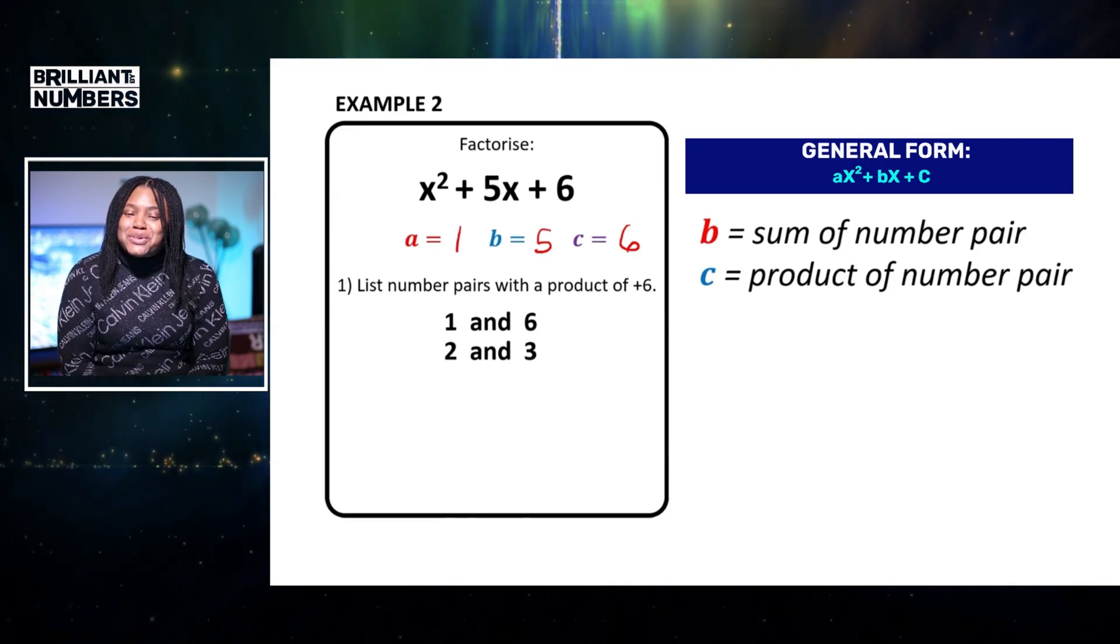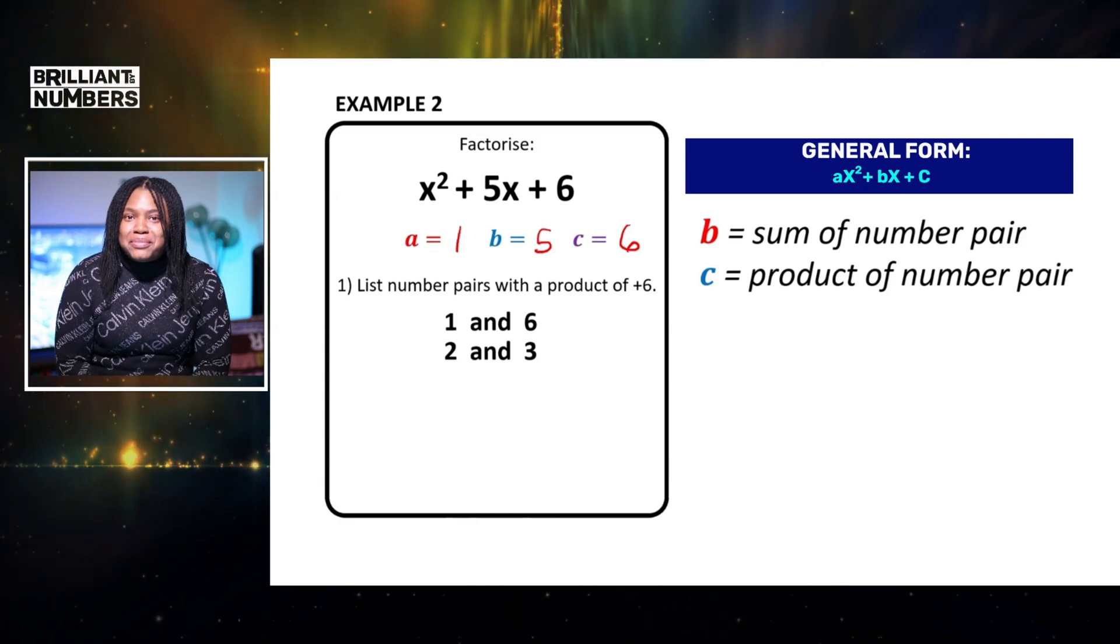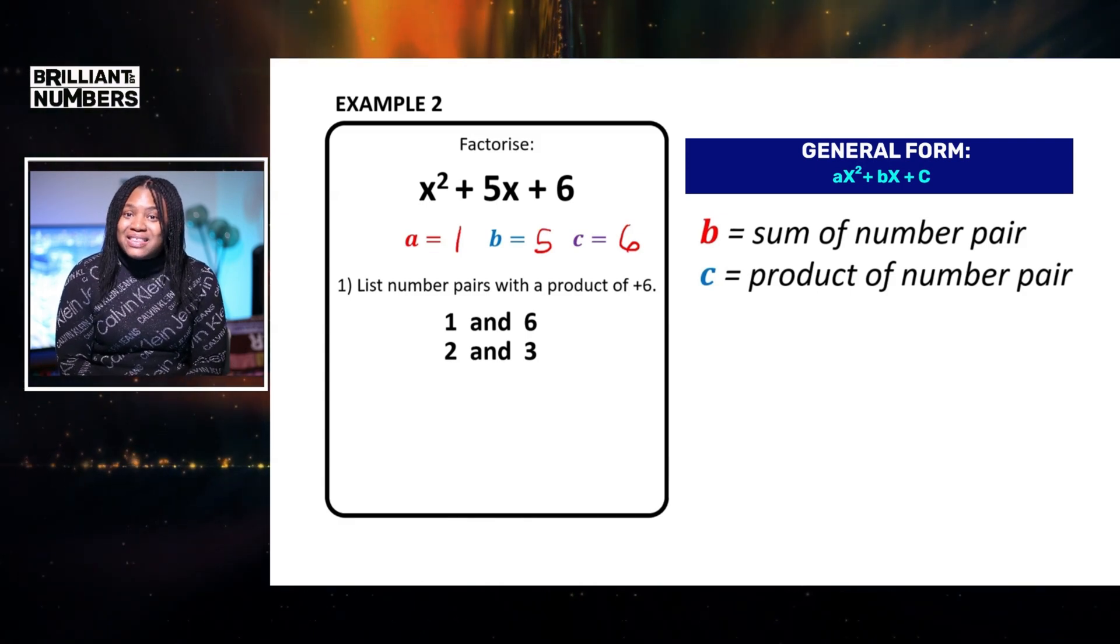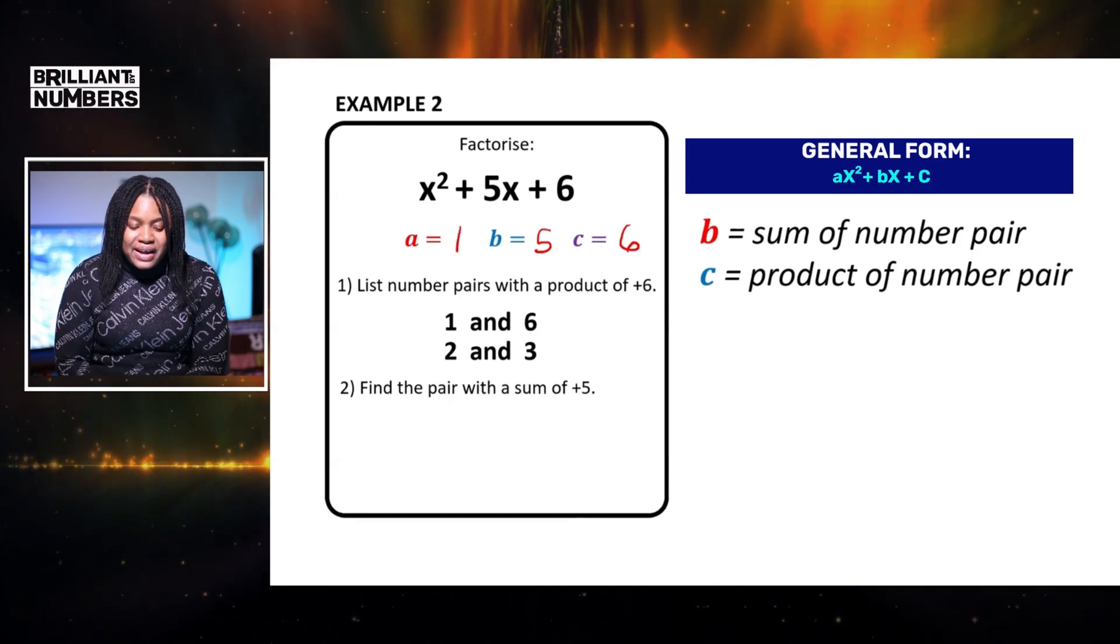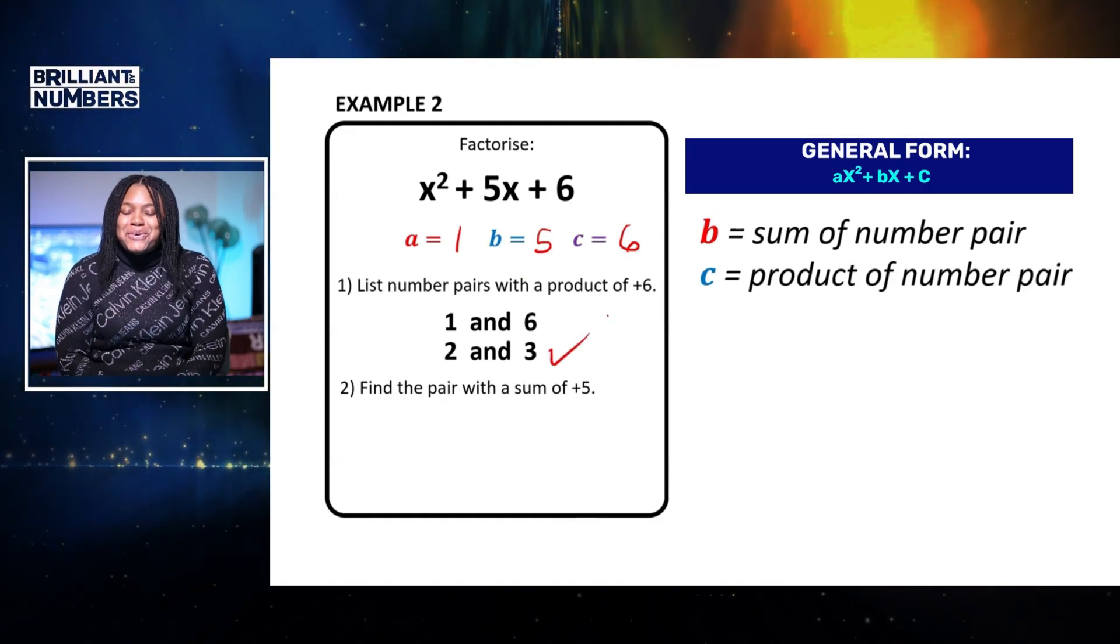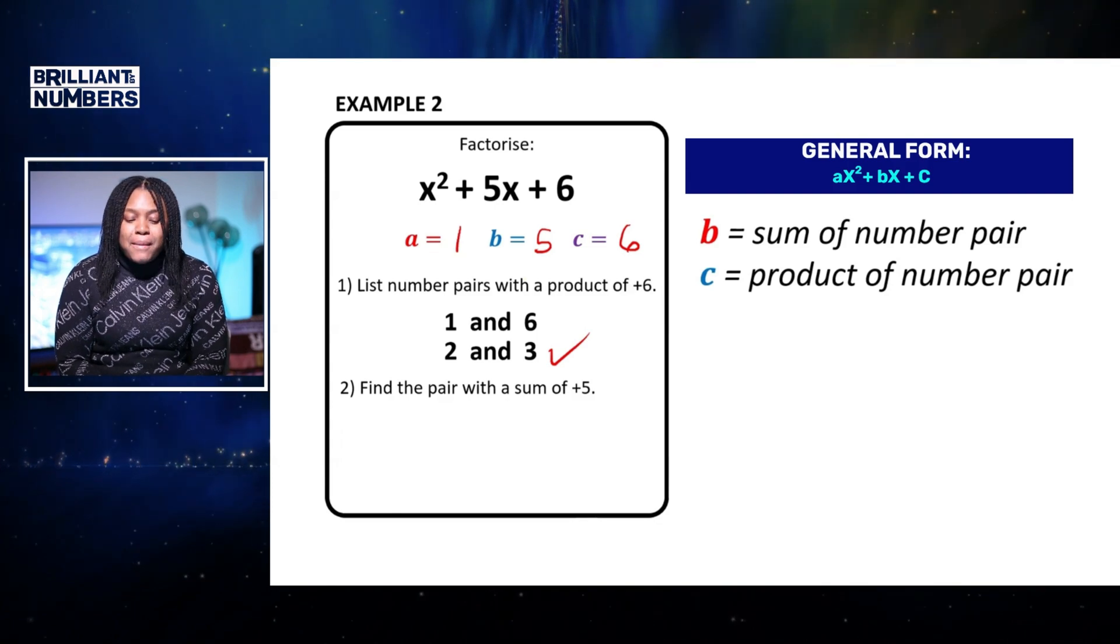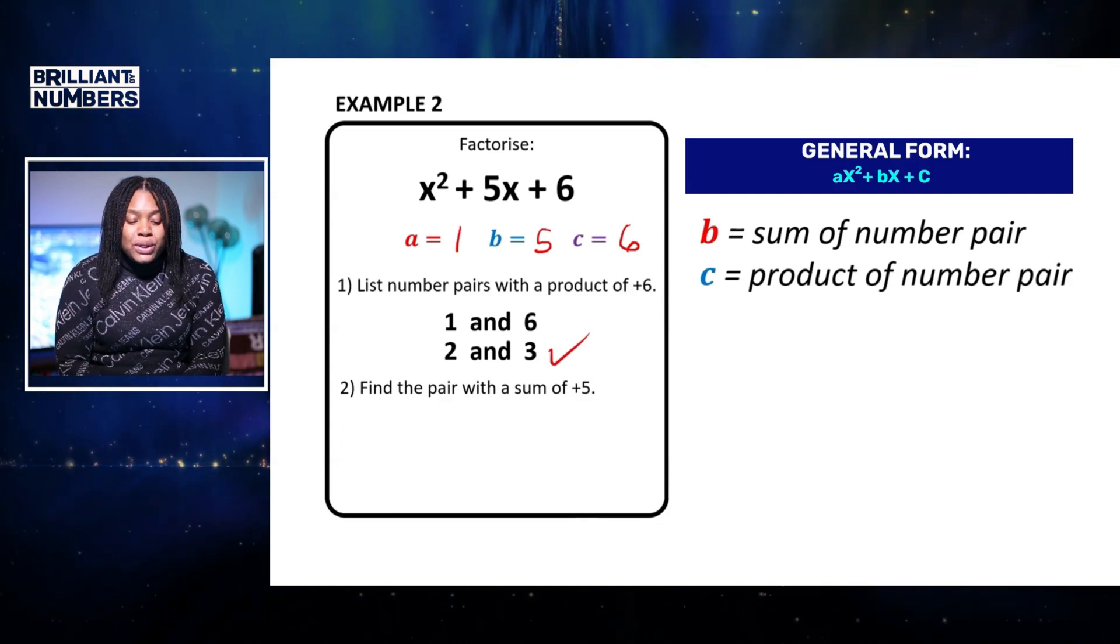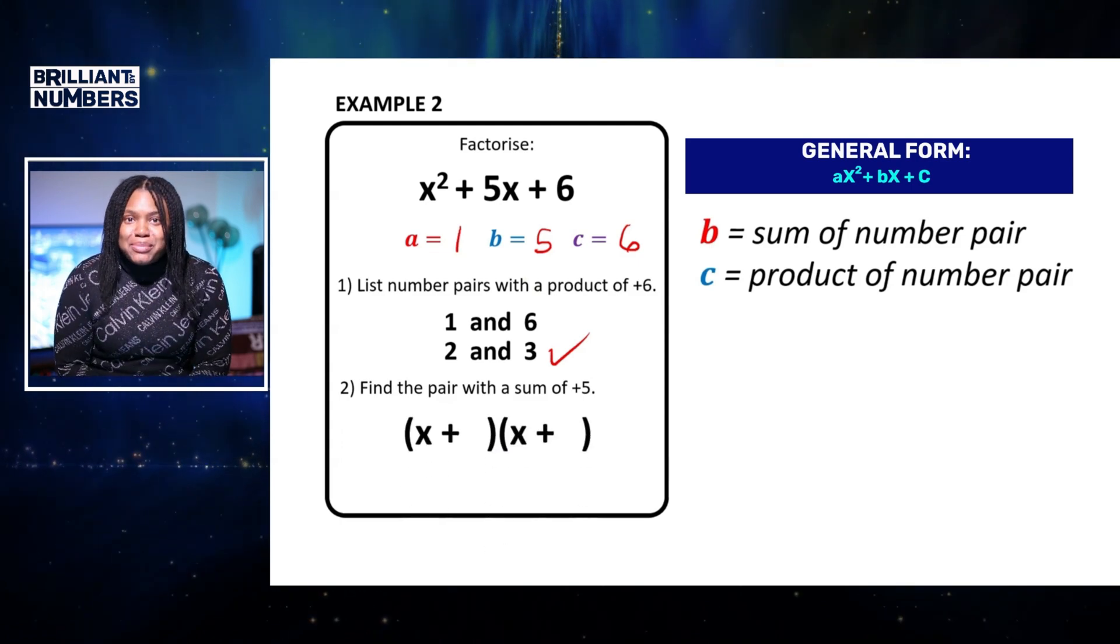Now the question becomes, which pair will add to the b term but multiply to give the c term? So remember, we want them to add to 5. So if you thought of 2 and 3, yes, you thought right. So 2 plus 3 gives us 5 but when we multiply them together we get 6.